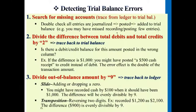Specifically, the error is misposting to the other side — where it should have been a debit but you posted it under credit, or the opposite: if it should have been a credit you posted it to debit. The error effect will double. So at the end of the trial balance, if you see a difference and you divide it by two and it gives you a whole dollar amount that is evenly divisible, it's likely that an error occurred based on posting numbers to the wrong side.